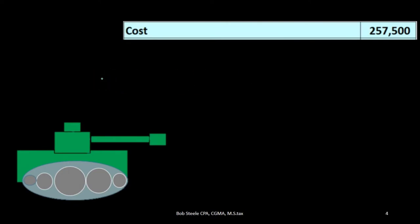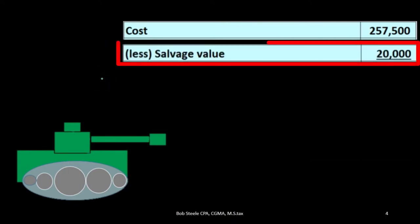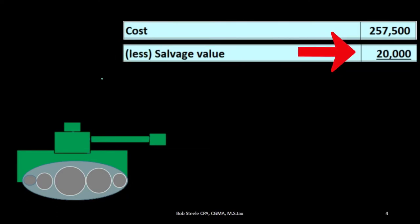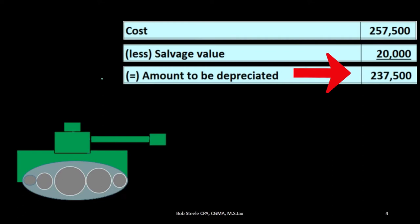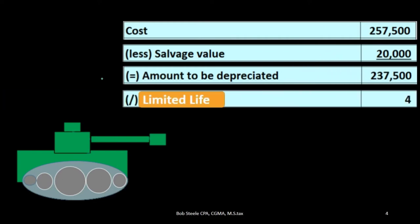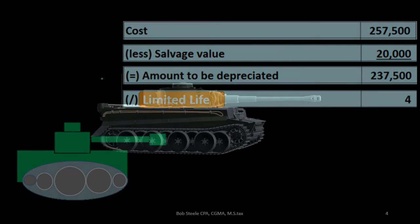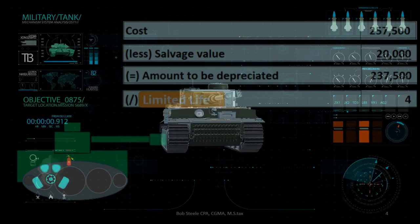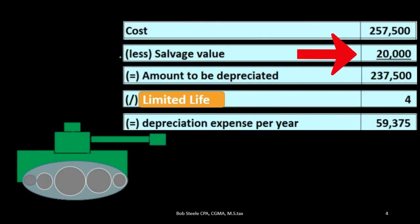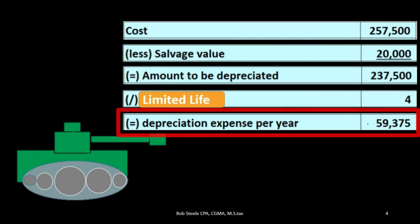We've got the cost of the tank: $257,500. We're going to subtract the salvage value — that's what we believe it will be valued at at the end of the limited life — giving us $237,500. Then we take the limited life of four years, meaning that's how long we believe the property, plant, and equipment will be useful to us in helping generate revenue. At the end of that time period we believe we'll have to sell it, and it will have a salvage value of $20,000.